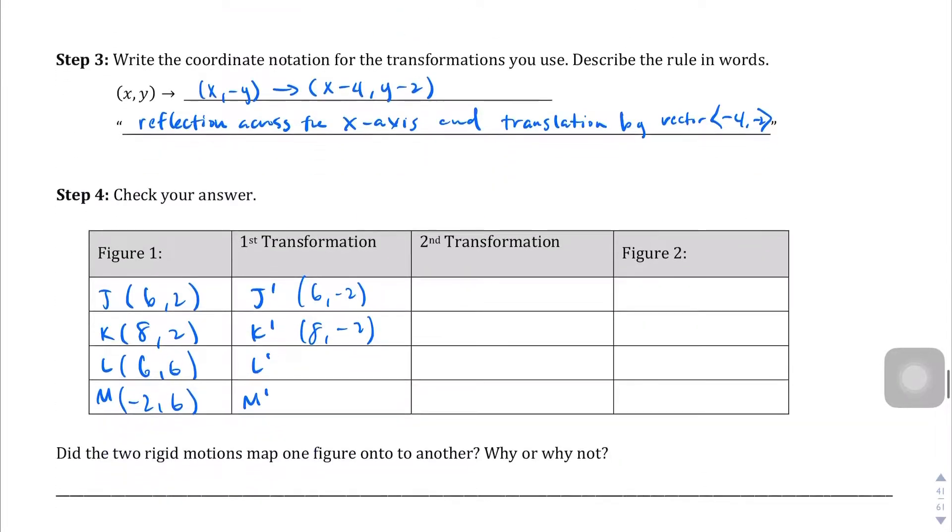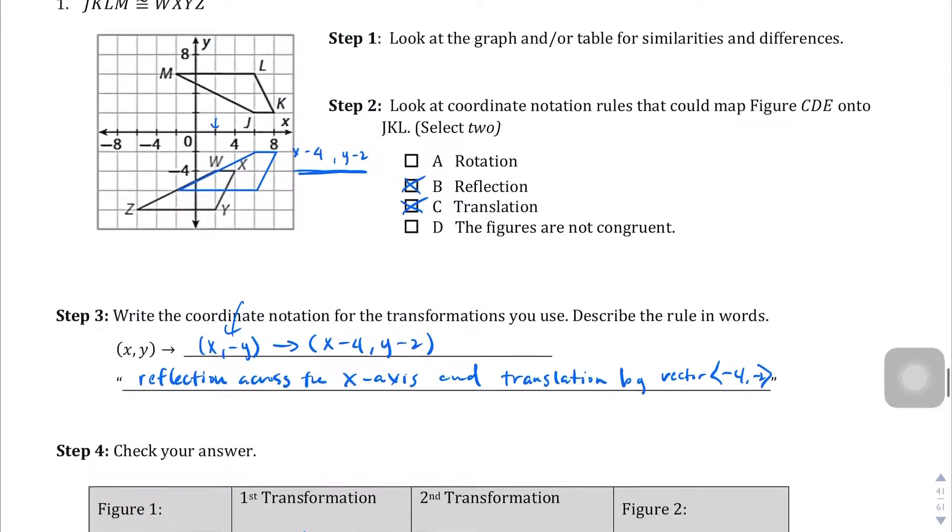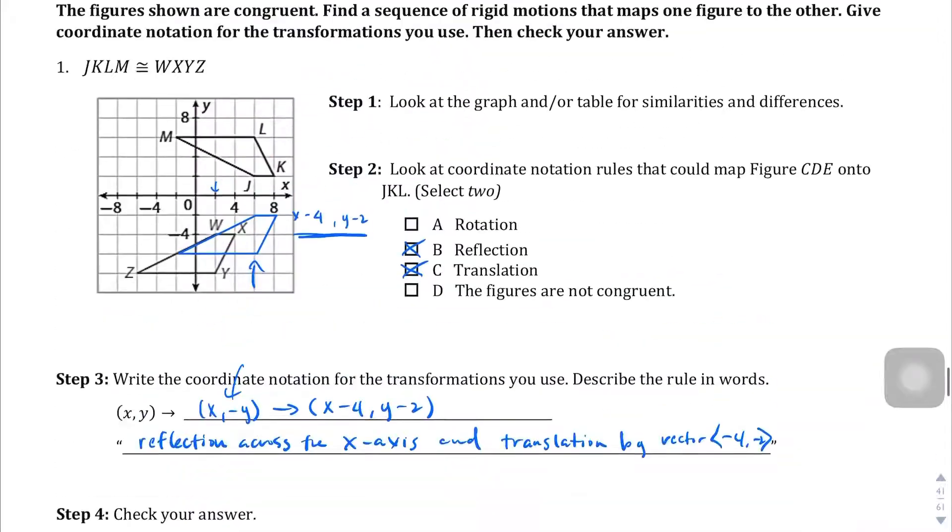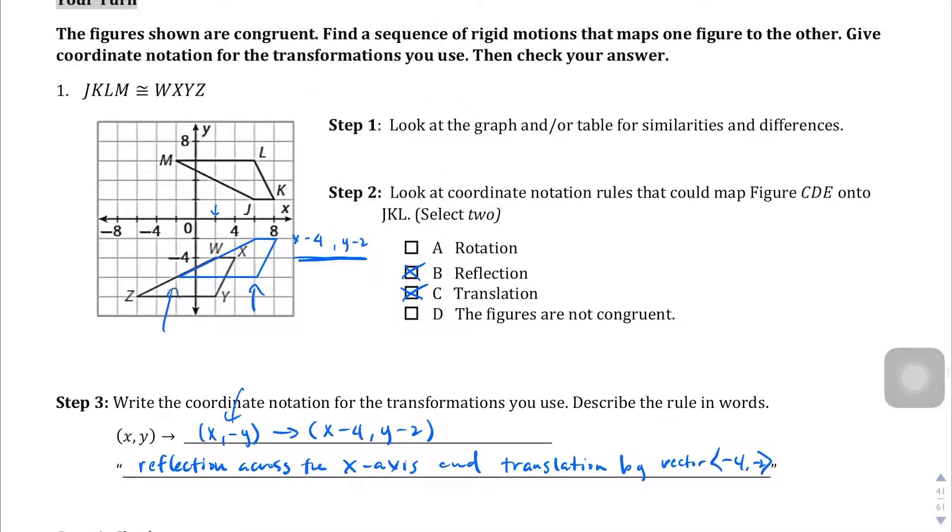Even without looking at it, right, if we're doing, according to this transformation, we're just going to change the Y values to opposite signs. So, let's verify this. L should be at (6,-6), which it is. And then (-2,-6) for the last one, which it is. So that's good.